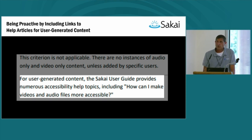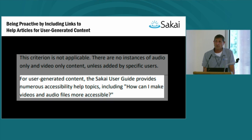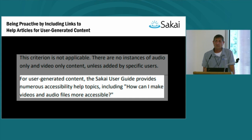For this next example, we're showing how we were able to incorporate references to our Sakai user guide, allowing us to promote our extensive help documentation — which is another potential selling point for a prospective Sakai customer. The distinction here is that we're talking about specific WCAG success criteria that were deemed not applicable because the corresponding feature was not included in Sakai by default; it only came into play with user-generated content. At that point, it's up to the individual user to ensure that the content they're adding is accessible, so to assist them we've included references to different help articles on a variety of accessibility topics.